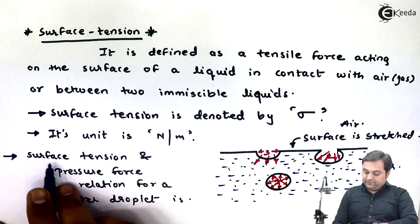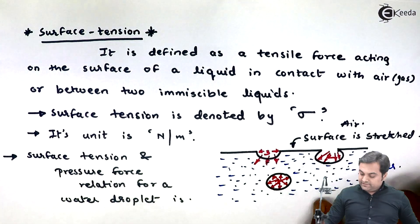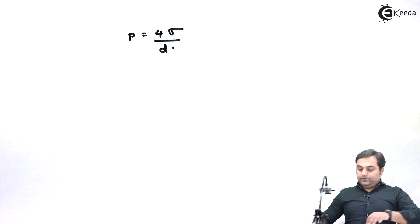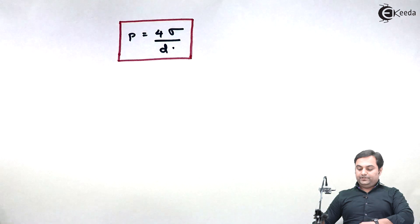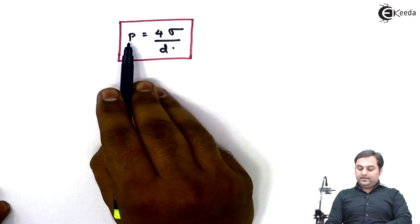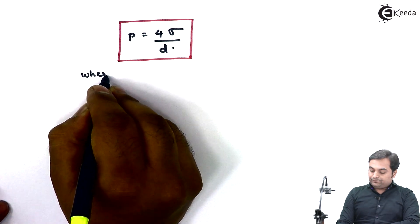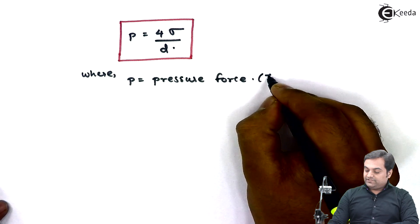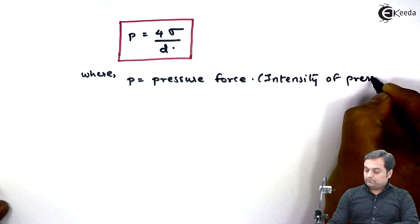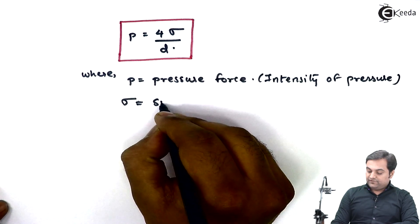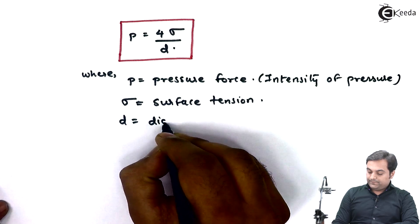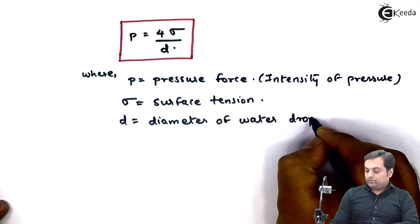Now let us look at the surface tension and pressure force relation for a water droplet. The relation is: P equals 4 times sigma divided by D. Here P is the pressure force, or intensity of pressure, sigma is the surface tension, and D is the diameter of the water droplet.